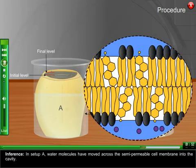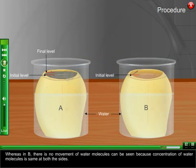Inference: In setup A, water molecules have moved across the semi-permeable cell membrane into the cavity. Whereas in B, there is no movement of water molecules because concentration of water molecules is same at both the sides.